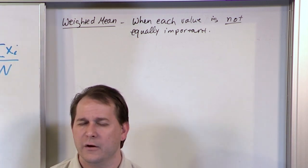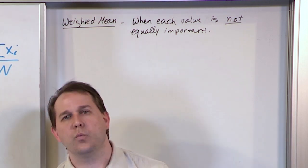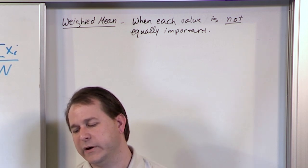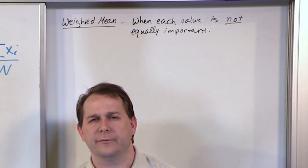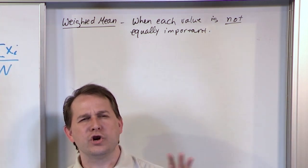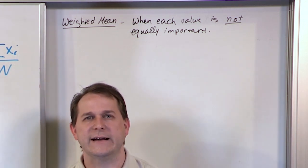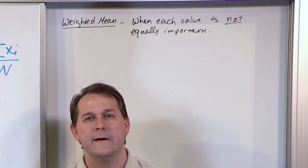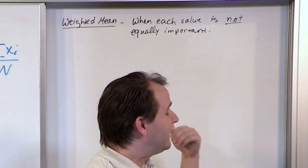In many cases you want equal weighting, but sometimes you don't. For instance, in a college class, what if your homework only counts for 20%? What if your quiz counts for 30%? What if your final exam counts for 40%? Then each of those grades are not of equal weight, so you can't just average them together to find your final grade. You've got to take into account the different weightings — that's a weighted average or weighted mean.